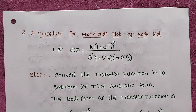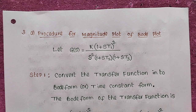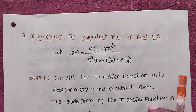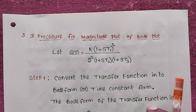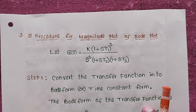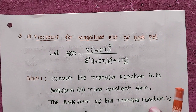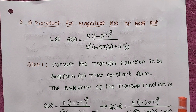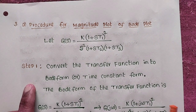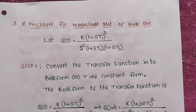G(s) equals k(1 + sT1)² divided by s²(1 + sT2)(1 + sT3). The numerator polynomial is k(1 + sT1)² and the denominator polynomial is s²(1 + sT2)(1 + sT3). Step 1 is to convert the transfer function into Bode form or time constant form.